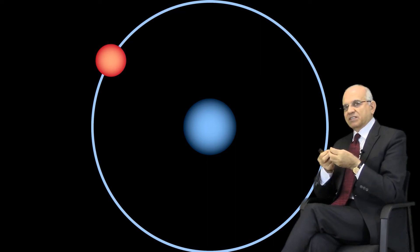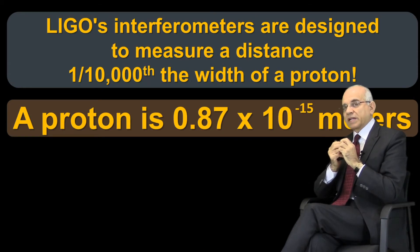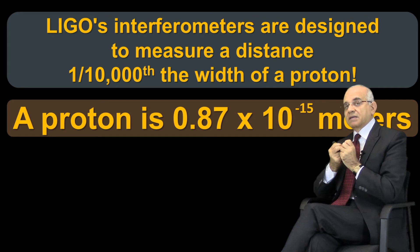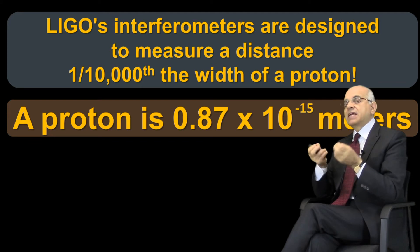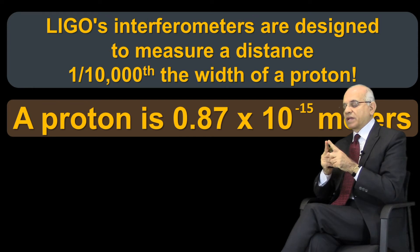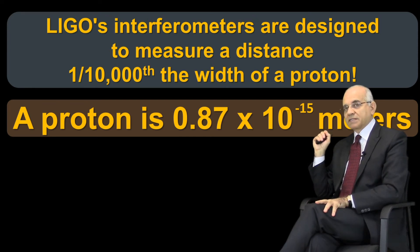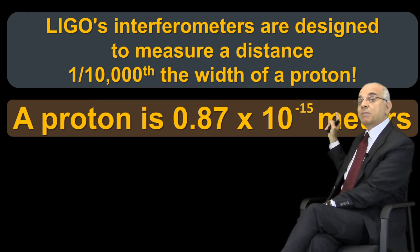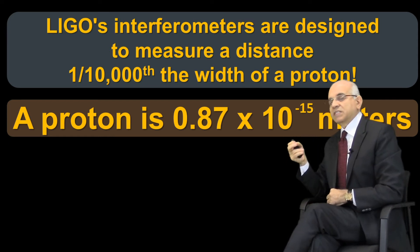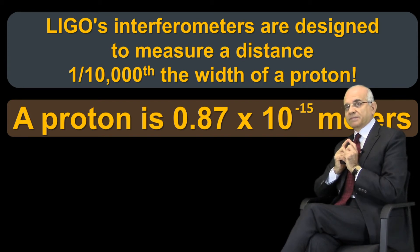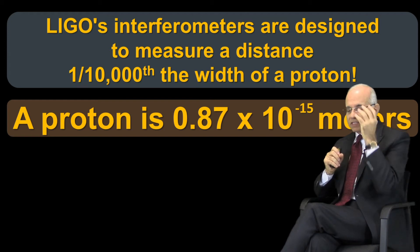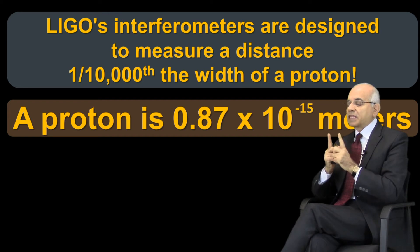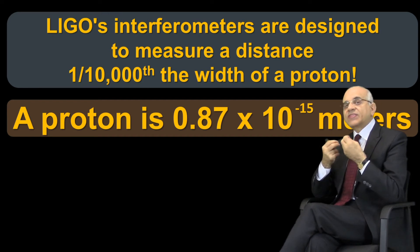Let me give you an idea how precise the measurements have to be of any changes in interference between the two beams of light. A proton is in the nucleus of the atom and it's very, very tiny. If you take a meter and divide it into 1,000 trillion parts — that is 1,000,000,000,000 parts — a proton is only about 0.87 of one of those parts, written as 0.87 times 10 to the minus 15. LIGO's interferometer technology is so precise that it can measure a change of distance of one millionth the width of a proton.